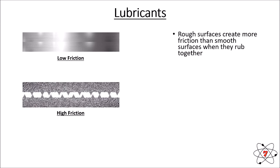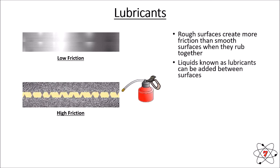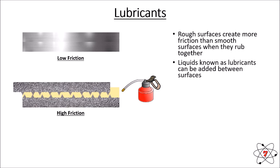If high friction is undesirable we need to reduce it. To reduce the amount of friction we add liquids known as lubricants to the surface. Lubricants are things such as oil — they are very slippery — and adding a lubricant to a surface reduces the friction, making those surfaces slide past each other more easily.